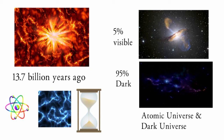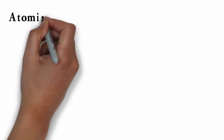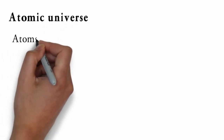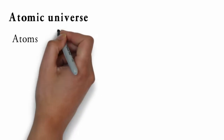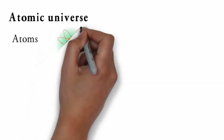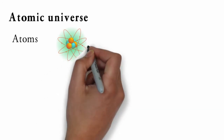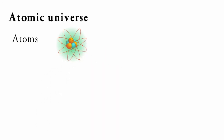Let's understand atomic and dark universe separately. The atomic universe is the part of the universe which comprises matter made of atoms. These atoms in turn are made up of electrons, protons and neutrons. The protons and neutrons reside inside the nucleus of an atom, whereas electrons are in the empty space surrounding the nucleus. Protons and neutrons are made up of quarks.